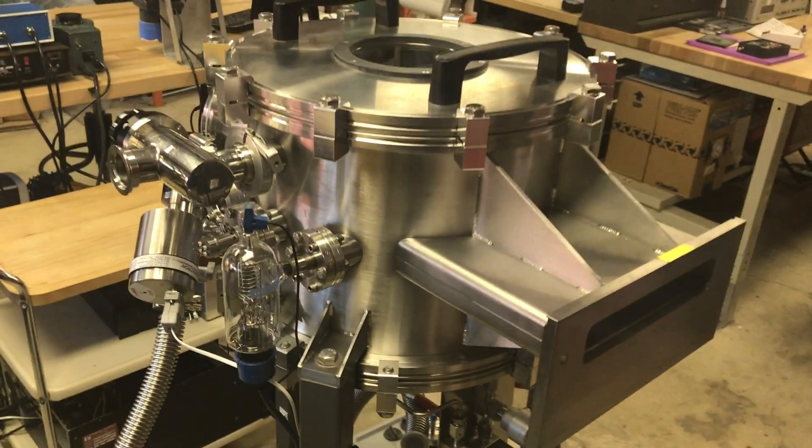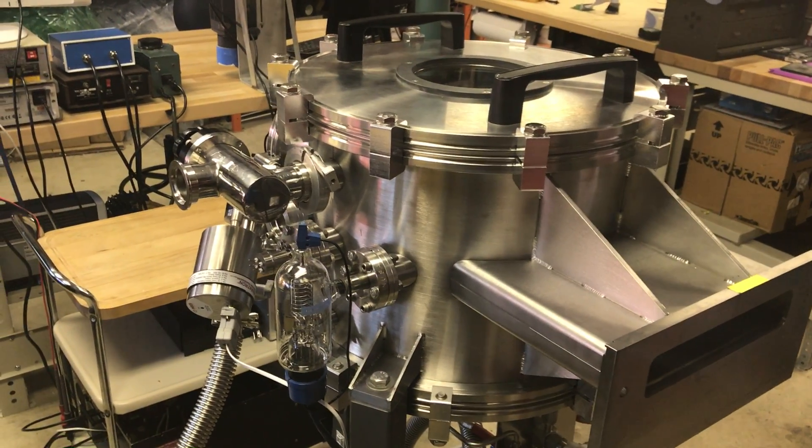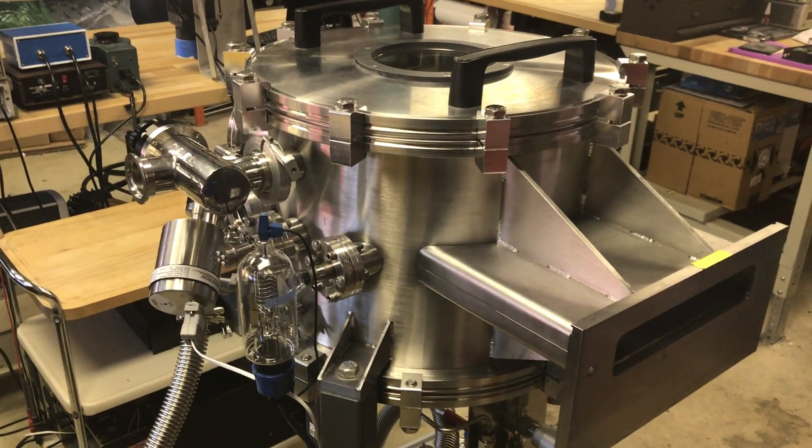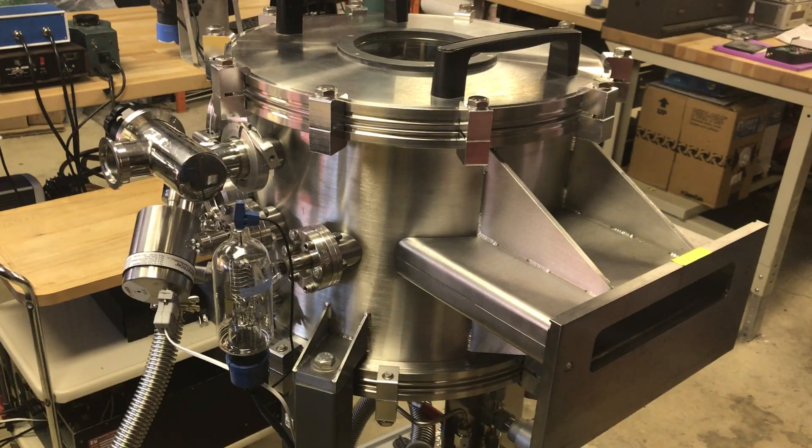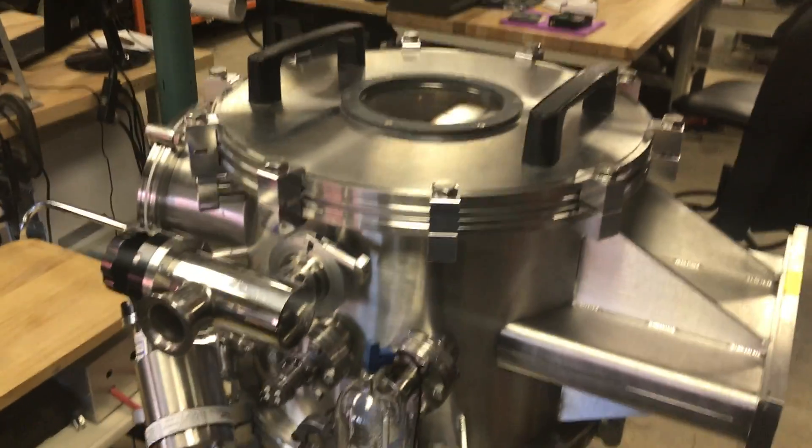And here's the vacuum chamber. So right now I'm getting this ready to do thermal evaporation of aluminum. And I'm going to be using that aluminum to do metalization of wafers. And then I can pattern that with my photolithography setup, which I'll show you in a second. And then I'll be able to make ICs from that. So that's the chamber.